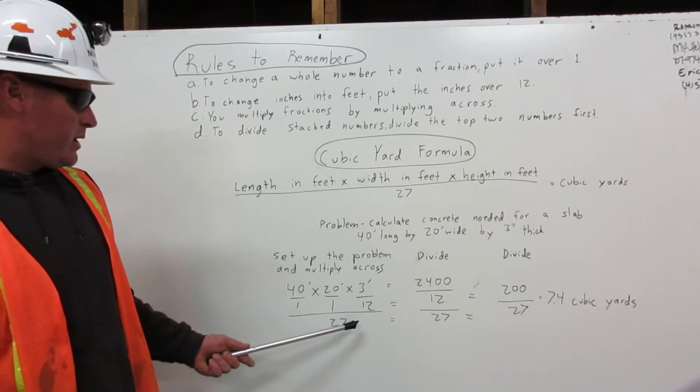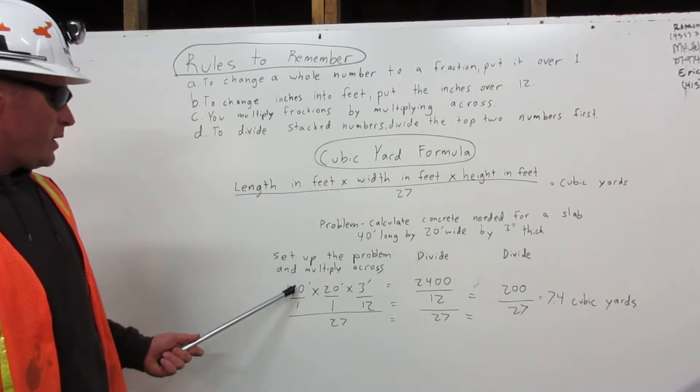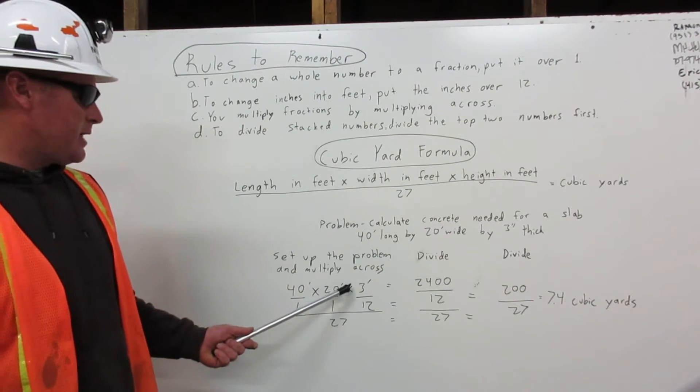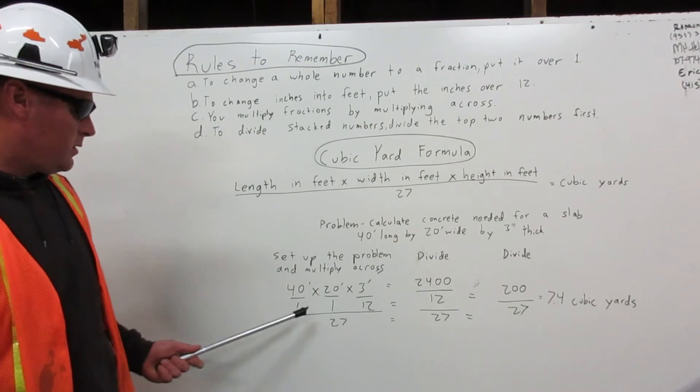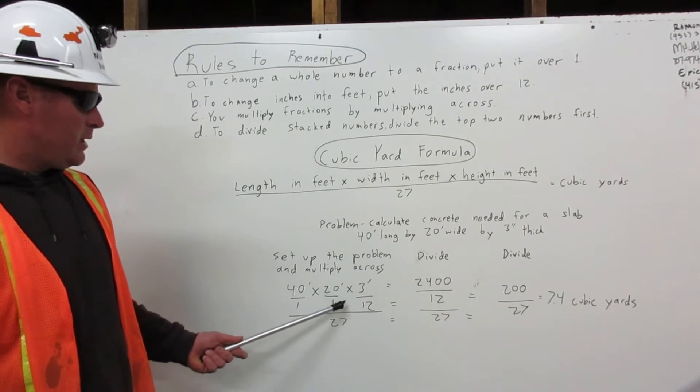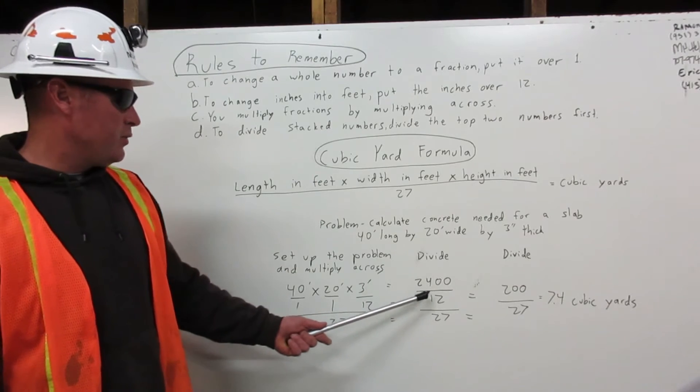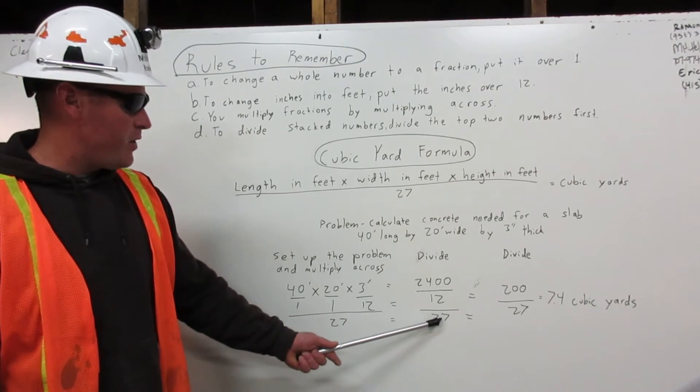Divide that by 27. 40 times 20 times 3 equals 2400. 1 times 1 times 12 equals 12. Bring our 27 over.